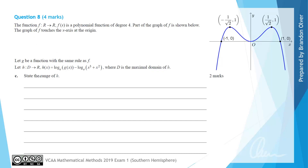For part c we want to state the range of the function h. An important thing to remember is that the maximal domain d was found to be x ∈ (−1, 0) ∪ (0, 1). What will be handy here is the actual rule for h of x.